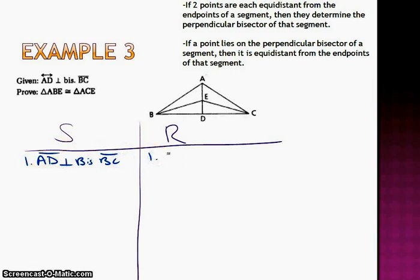What's that tell us? Well, if I know AD is a perpendicular bisector of BC, I know that, well, if a point lies on the perpendicular bisector, then it is equidistant from the endpoints, so I can use this to prove AB is congruent to AC.